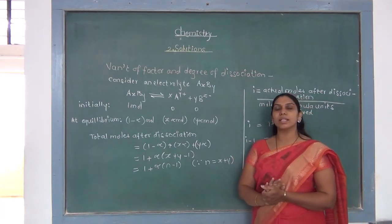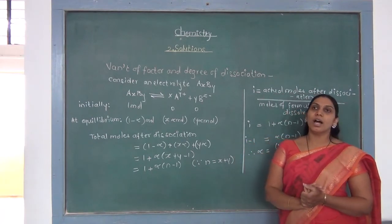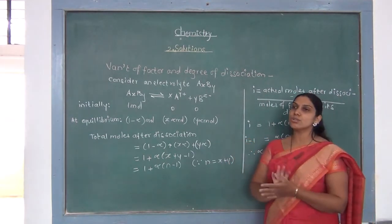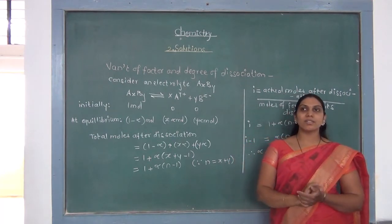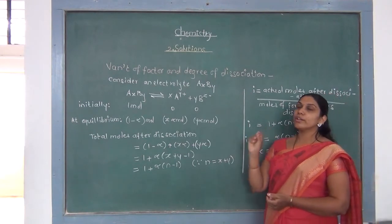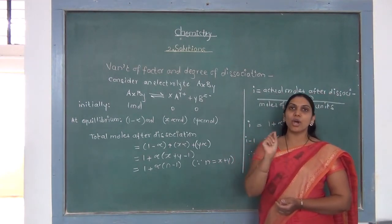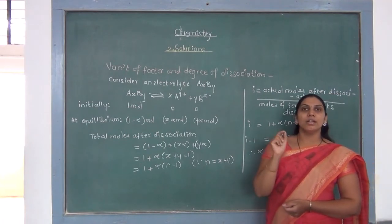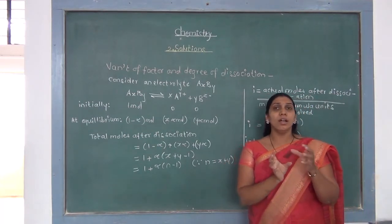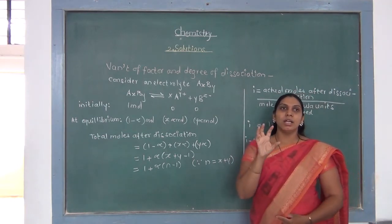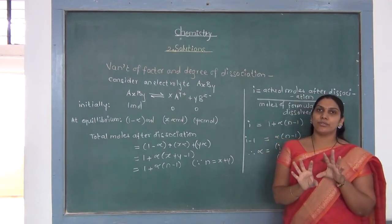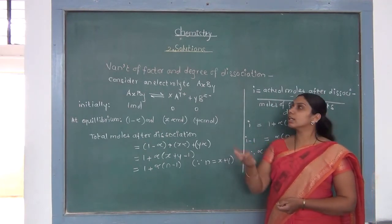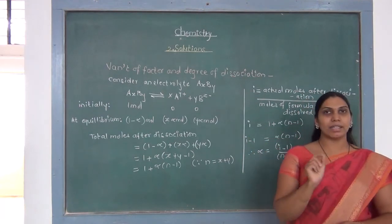Some part of the weak electrolyte remains in an undissociated state even when dissolved in solution. For weak electrolytes, we must take into consideration a concept called the degree of dissociation, denoted by alpha. Degree of dissociation is a mathematical quantity that gives us the actual fraction of the weak electrolyte that is dissociated.